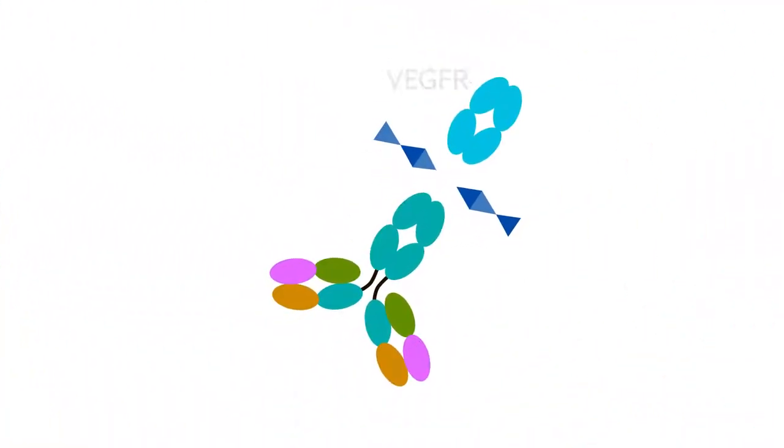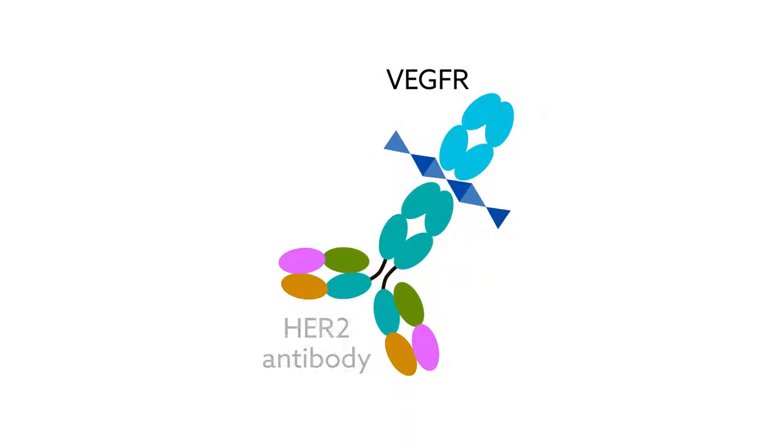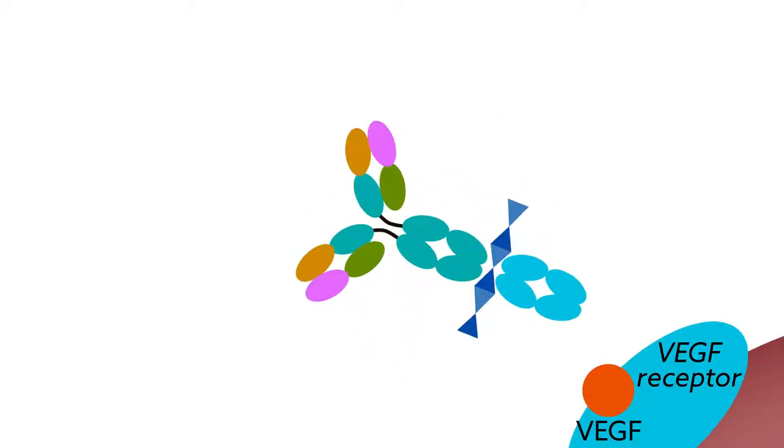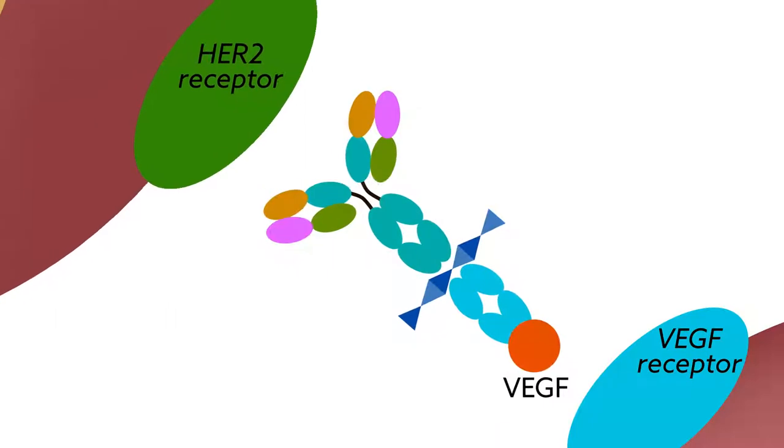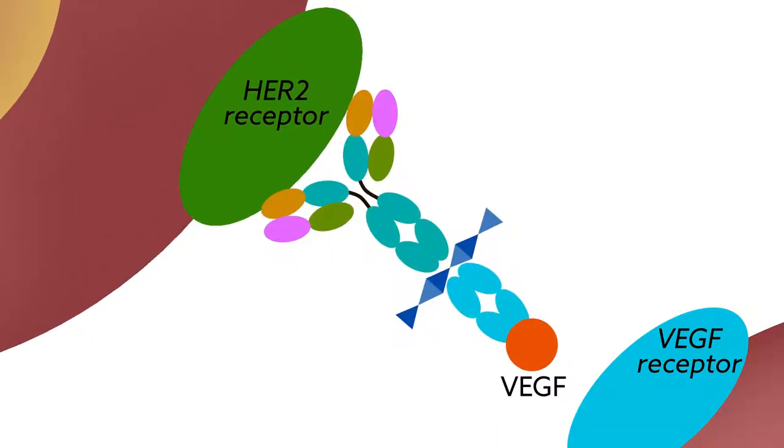Their approach was to fuse an antibody shaped like VEGF's receptor, VEGFR, to a conventional form of the HER2 antibody. The receptor-like region would thus serve as a decoy to neutralize VEGF from signaling the formation of blood vessels, with the HER2 portion locking onto its own target.